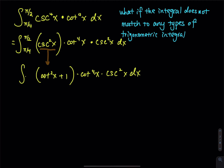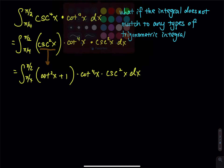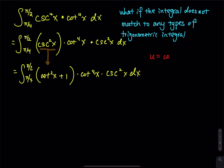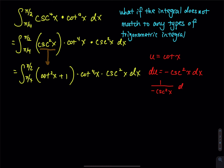This is the integral from π/4 to π/2. Now I would like to perform a u-substitution. I would like to let u equal cotangent x. Then du equals negative cosecant squared x dx, which gives 1 over negative cosecant squared x du equals dx. And then this will replace the dx in the original integral.